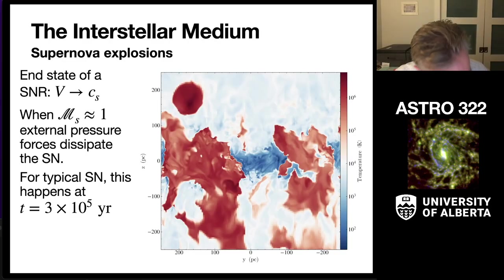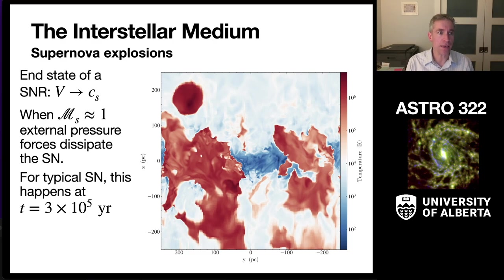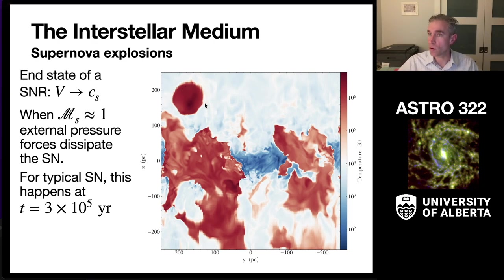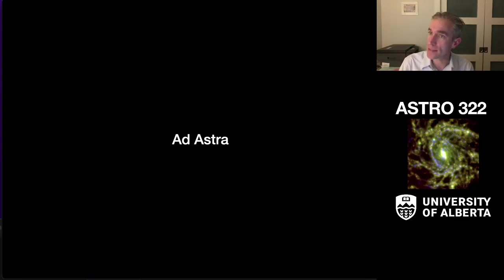That brings us to the end of our two case studies. Over about 300,000 years, the supernova explosion gets washed away and mixed in with the ISM as it slows down and is no longer pushing hard. We'll cover heating and cooling and the general model for the ISM next week. Have a good time and good luck on your science.